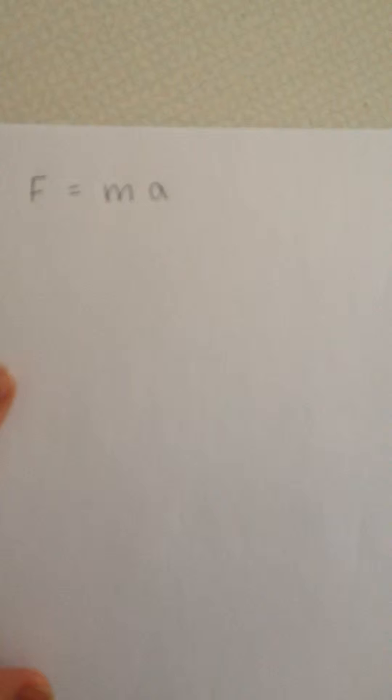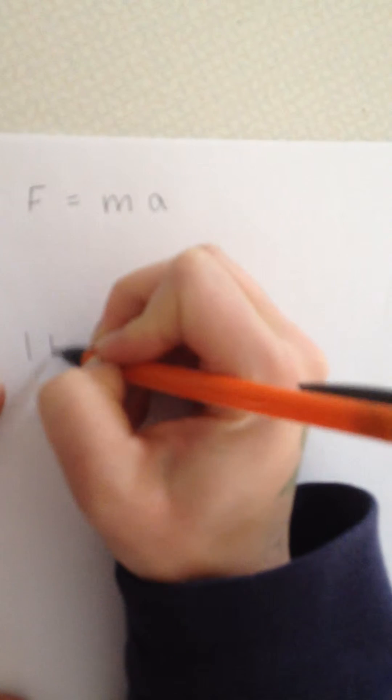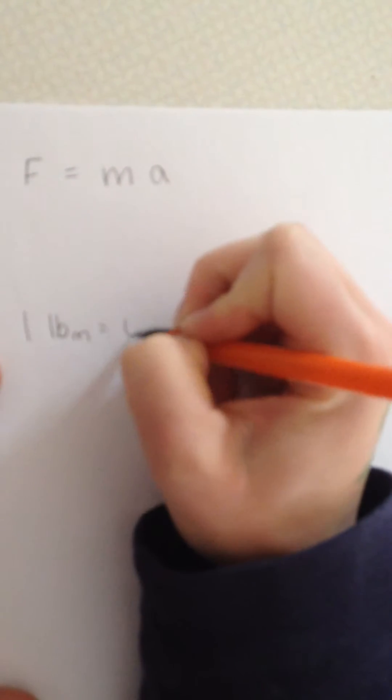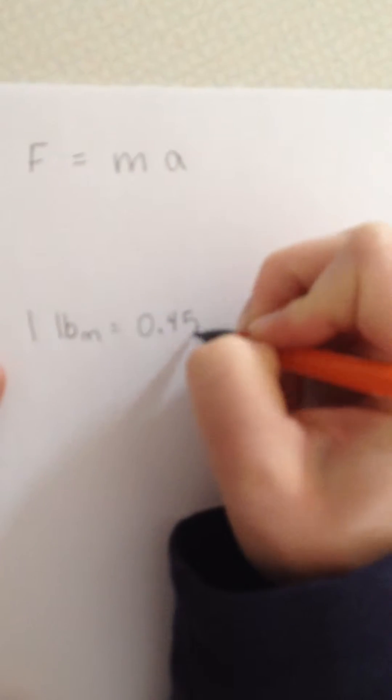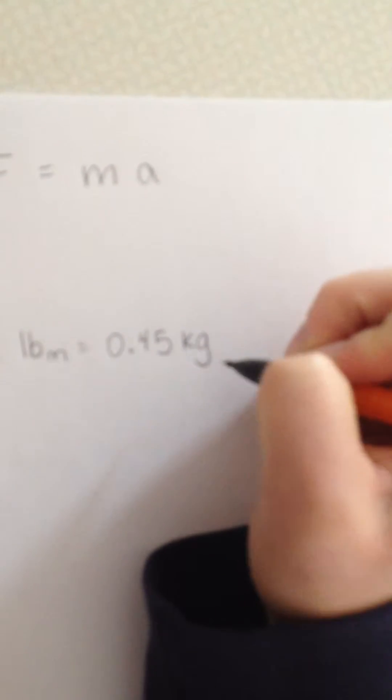The first unit of mass is the pound mass, which is equivalent to 0.45 kilograms. One pound mass looks something like this - it's about a pound of butter.